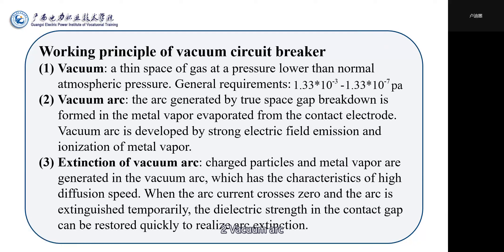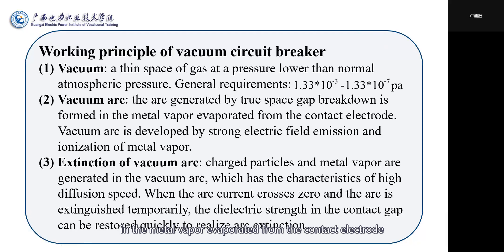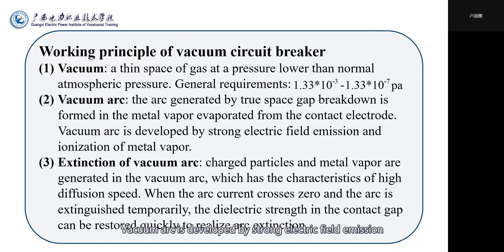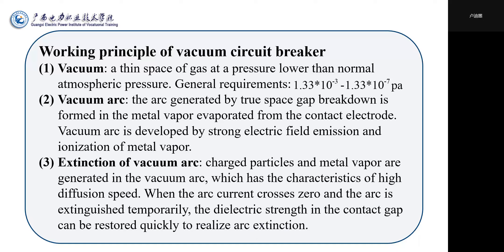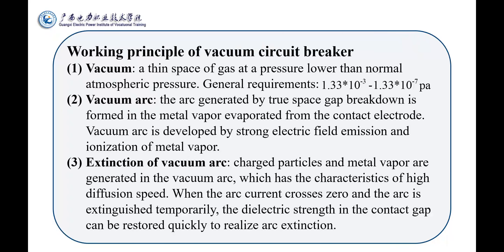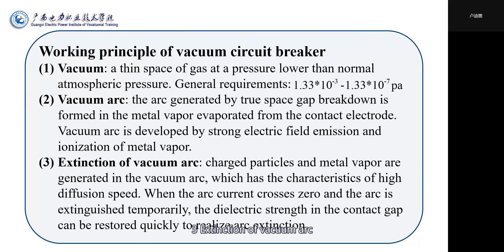(2) Vacuum arc: the arc generated by a vacuum space gap breakdown is formed in the metal vapor evaporated from the contact electrode. Vacuum arc is developed by strong electric field emissions and ionization of metal vapor.